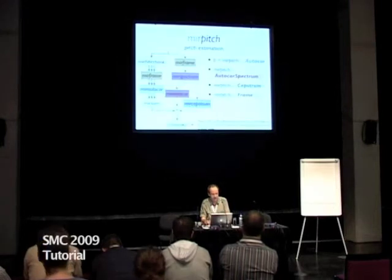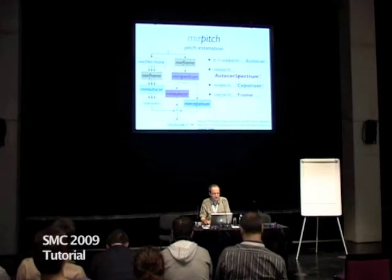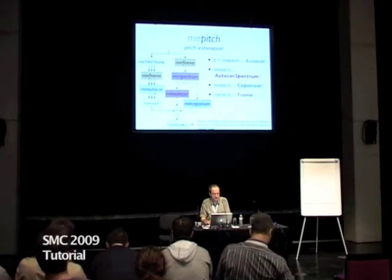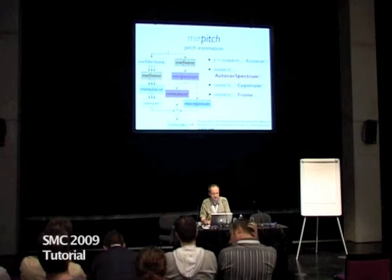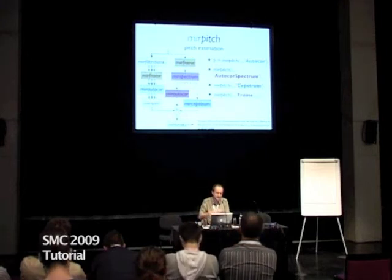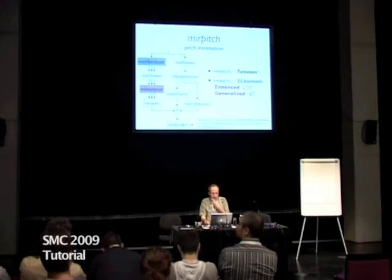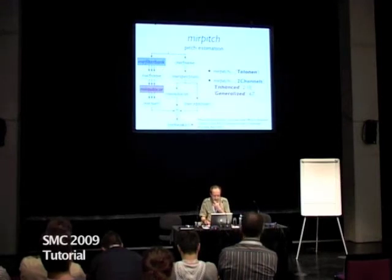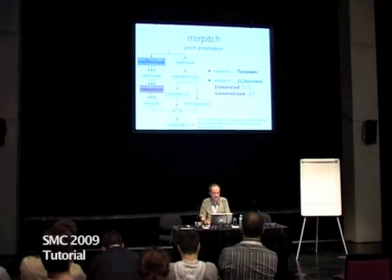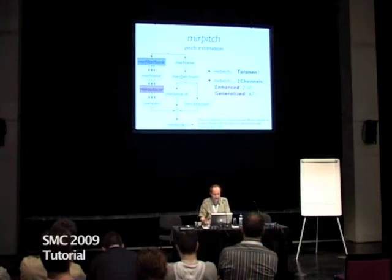There are different techniques possible for pitch extraction: either autocorrelation after a filter bank — that's the one used by default — or you can compute a spectrum, autocorrelation of the spectrum to see the periodicities in the FFT, or the cepstrum, and so on. You can also combine and multiply the results. The approach used by default, which we found works quite well in our examples, is the Tolonen-Karjalainen approach, using a filter bank with two channels as shown previously, with enhanced and generalized autocorrelation.